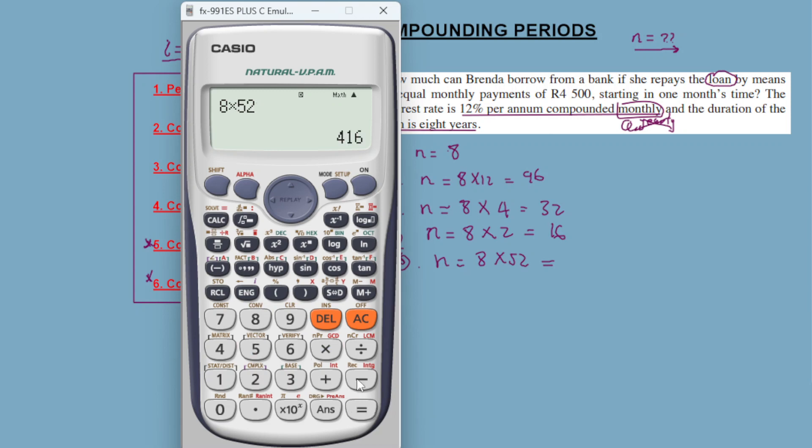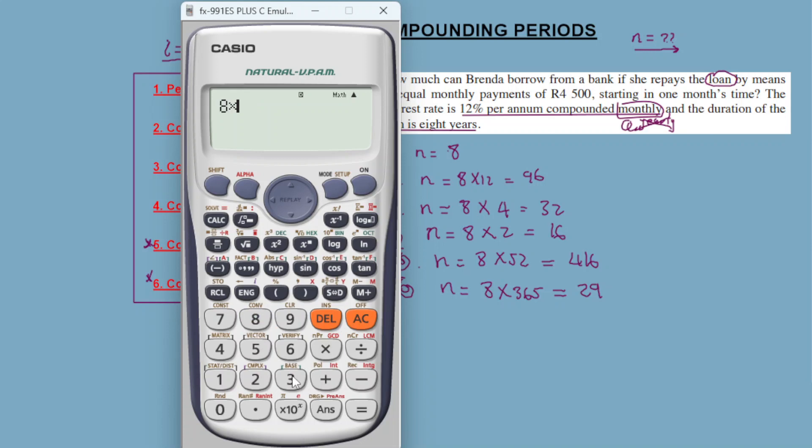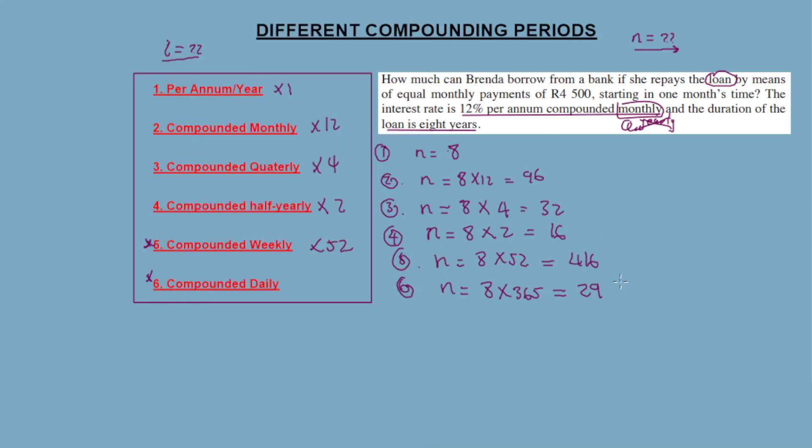Number six: daily. N is equal to 8 times 365, which is 2920. Now we multiply by 365.